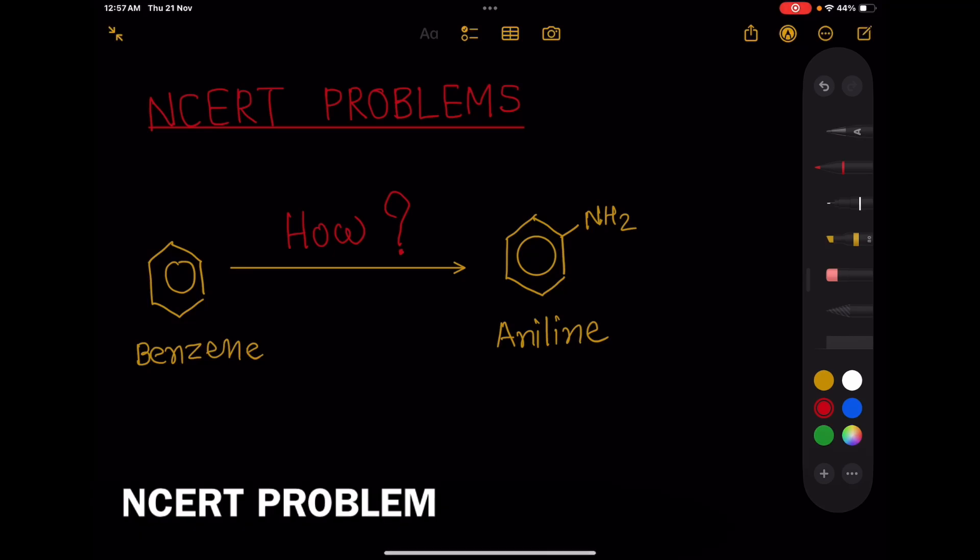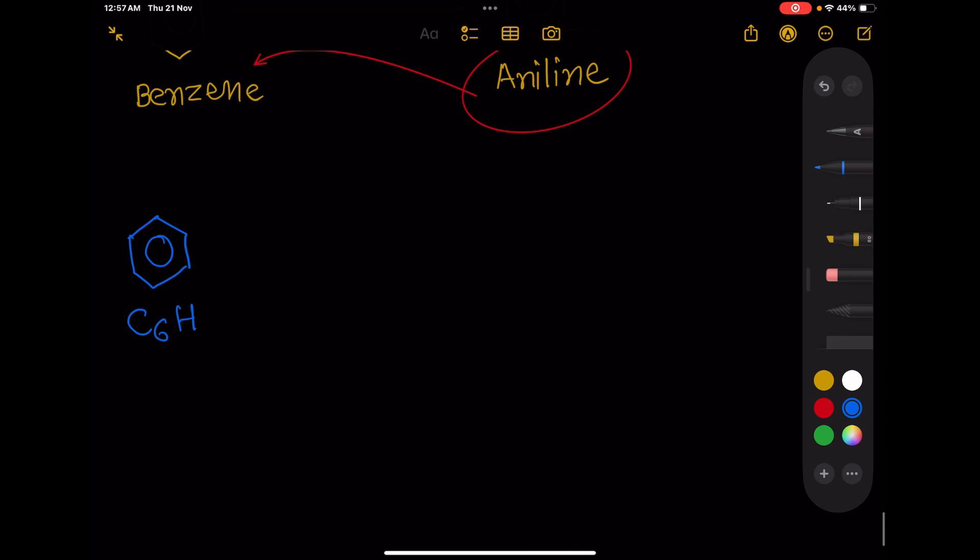This is an NCERT problem. The question is how to synthesize aniline from benzene, C6H6.